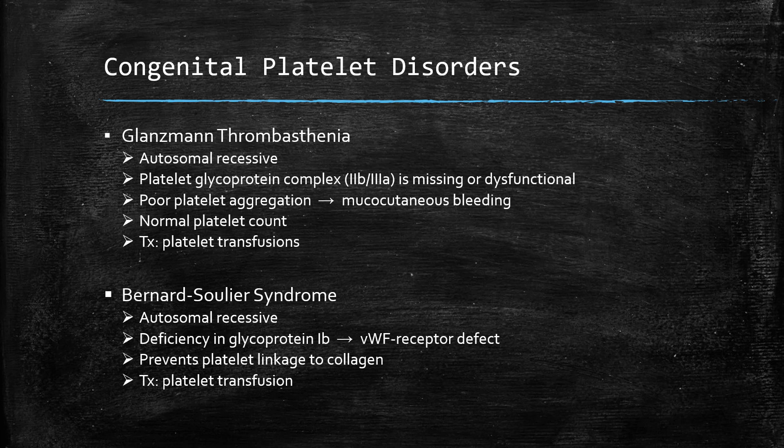There are two congenital platelet disorders worth discussing. Glanzmann thrombasthenia is an autosomal recessive disease in which the platelet glycoprotein complex 2B-3A is missing or dysfunctional, resulting in poor platelet aggregation and clinically resulting in mucocutaneous bleeding. These patients will have a normal platelet count, and management in the perioperative period will be platelet transfusions as necessary. Bernard-Soulier syndrome is another autosomal recessive disease with a deficiency in glycoprotein 1B — a von Willebrand receptor defect on the platelet — which prevents platelets from linking up to collagen. Again, treatment will be platelet transfusions as necessary.